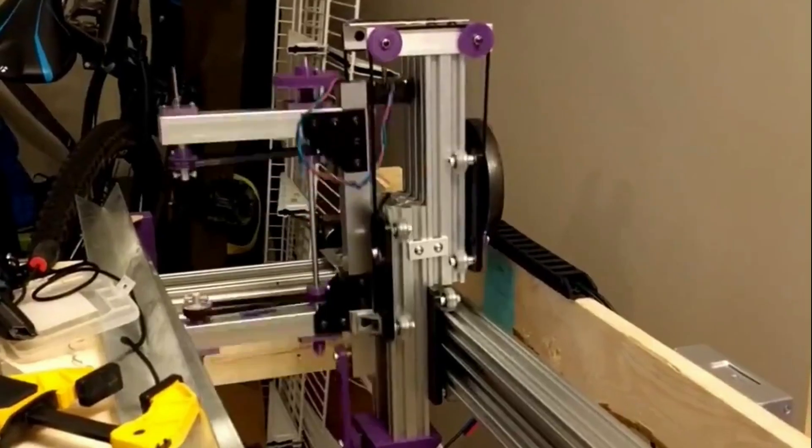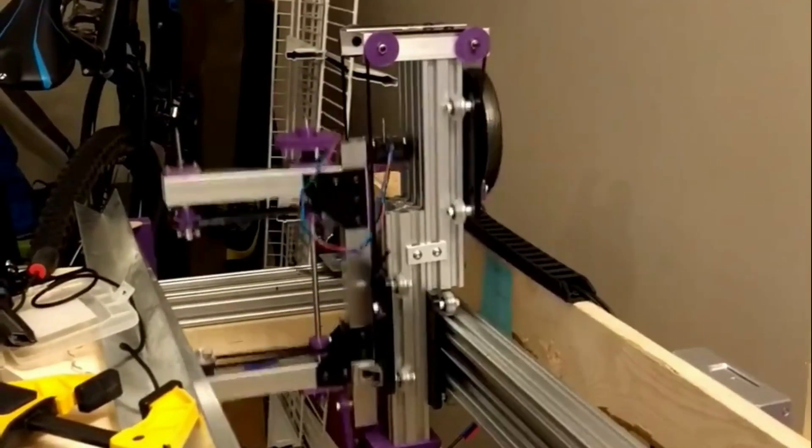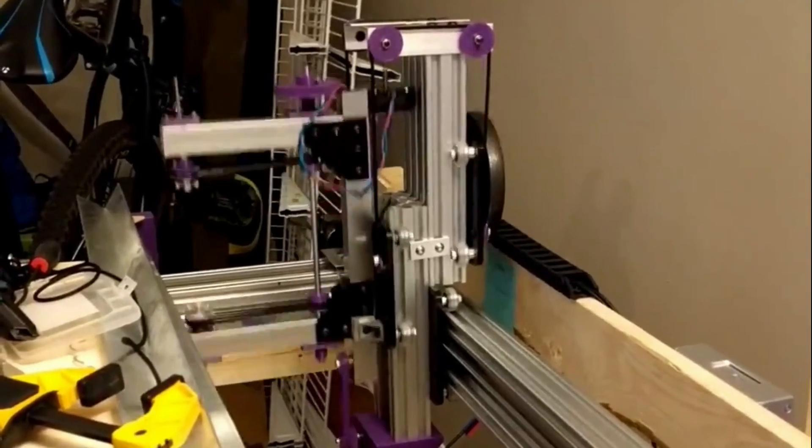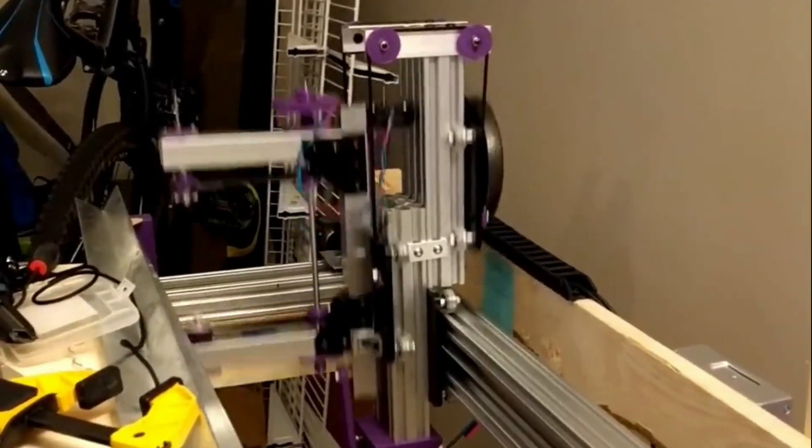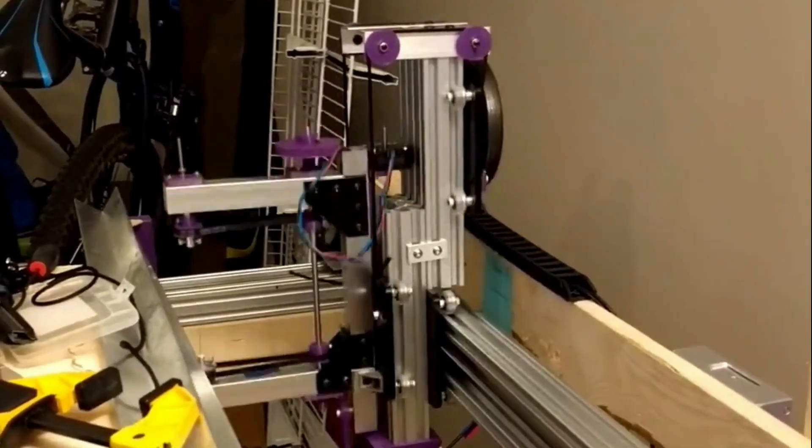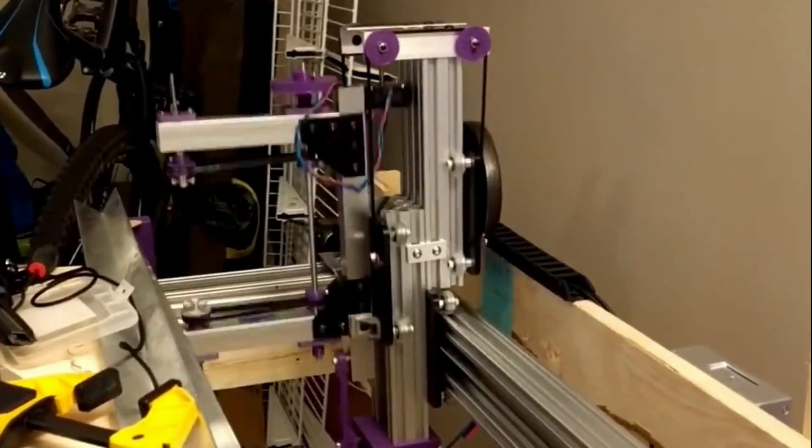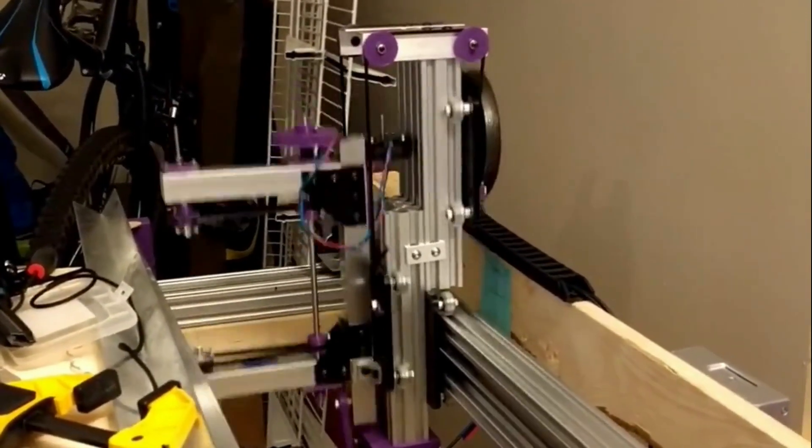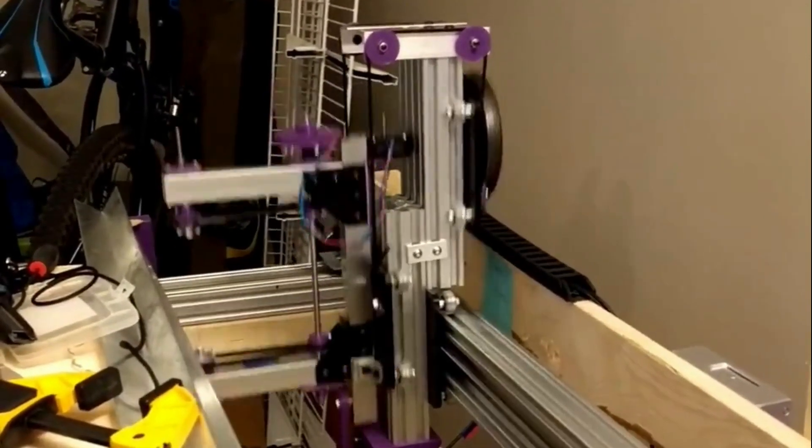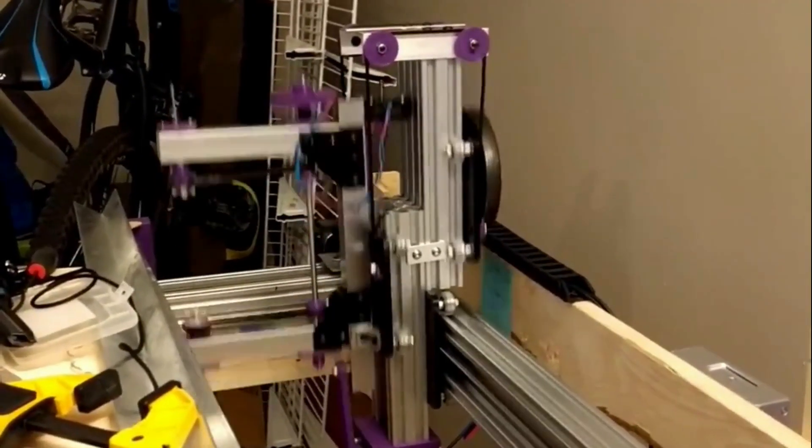One thing I experimented with was adding a counterweight on a pulley system to hopefully increase the speed at which I could move the saw blade. This worked at the same speeds I was using before, but once passing a certain threshold, the counterweight would continue moving upward after the saw blade was past top dead center and on its way down. Then when the counterweight finally started moving back down, it tried to jerk the whole frame back upwards, which is the clicking sound you hear here.